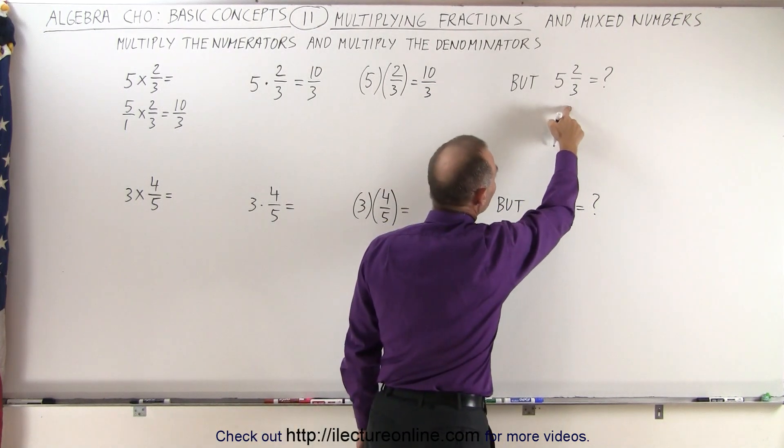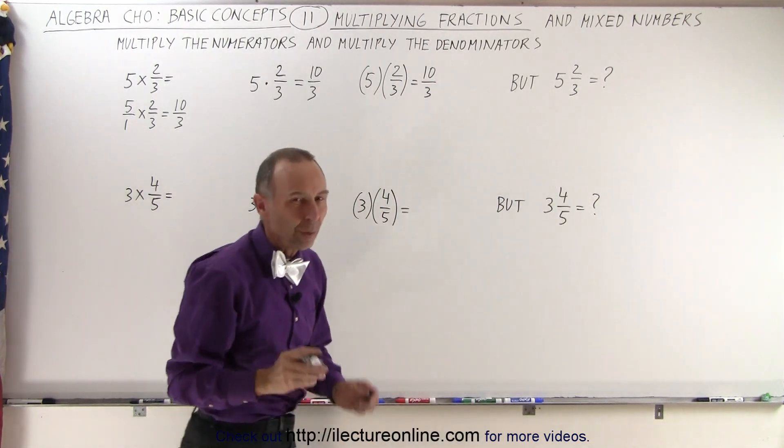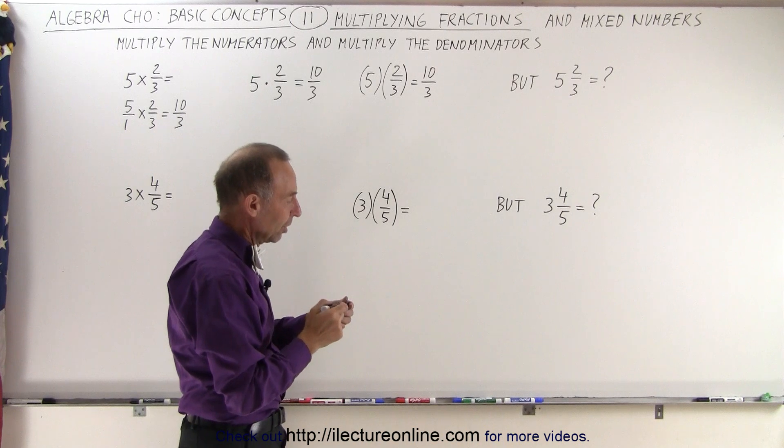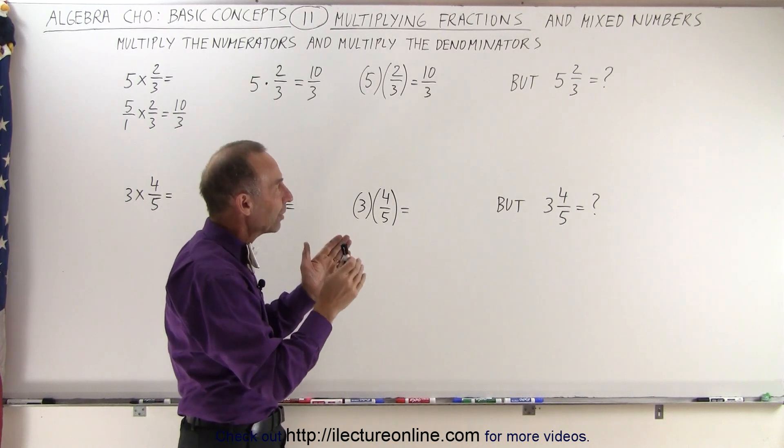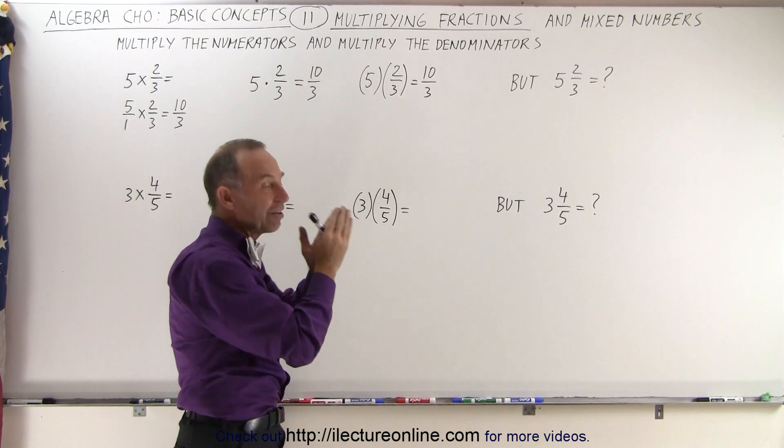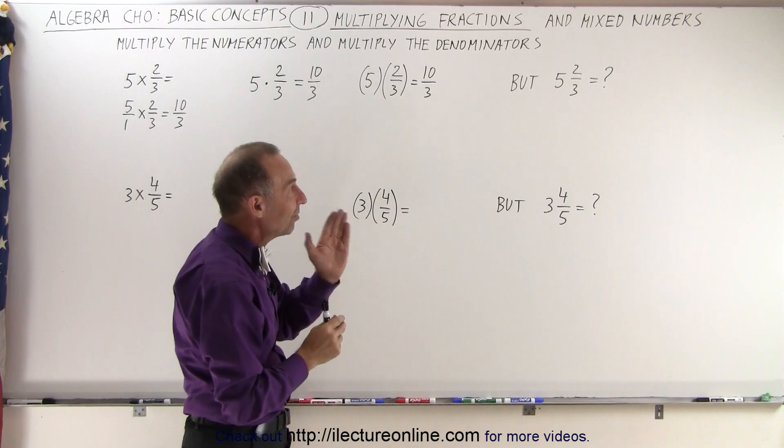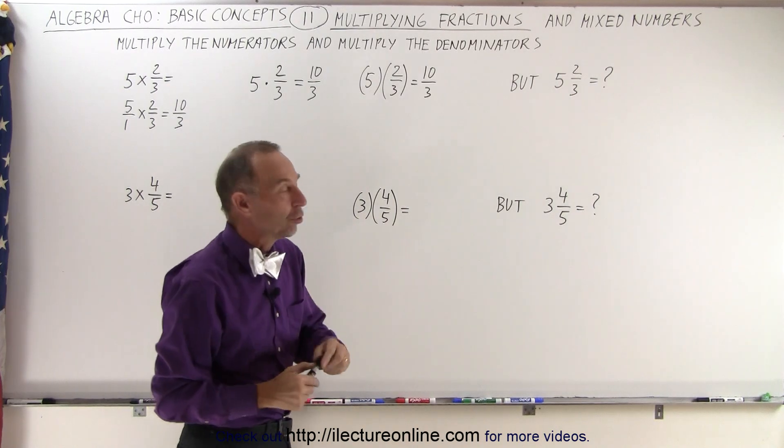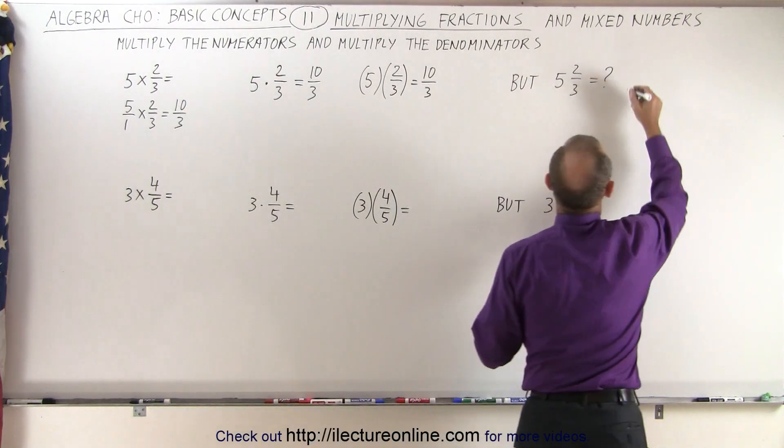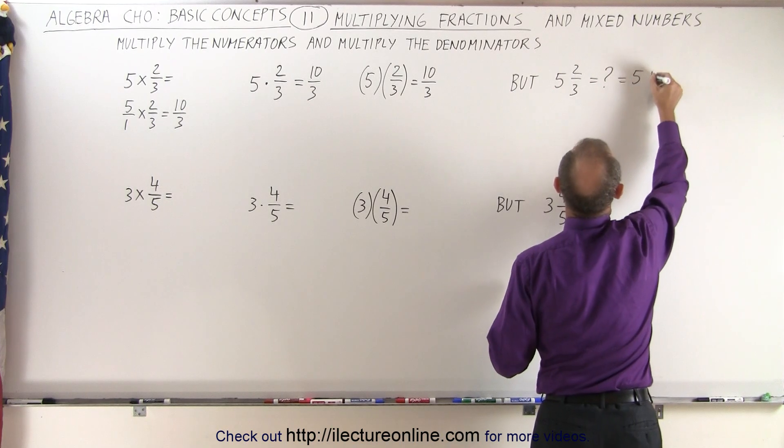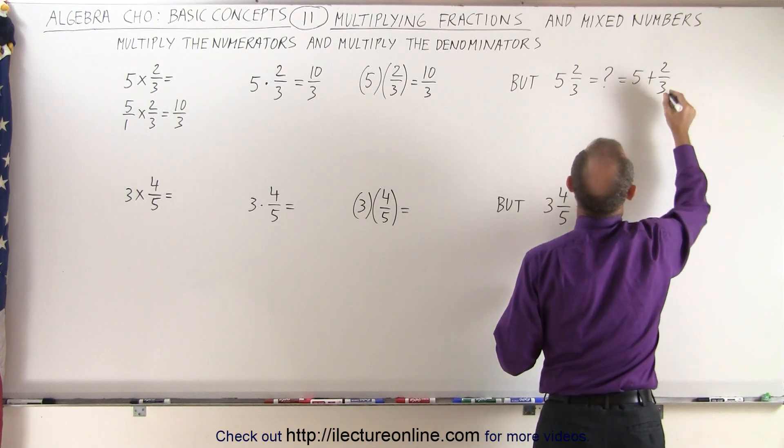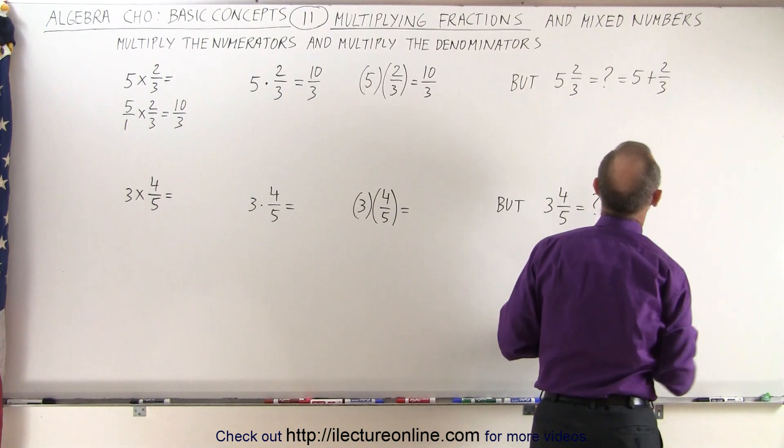But when we see this here, that's something entirely different. That's what we call a mixed number. That means that we're putting together an integer and a fraction together, and this actually means that we're adding the two. So when we see it like that, this is equal to 5 plus 2 thirds, not 5 times 2 thirds.